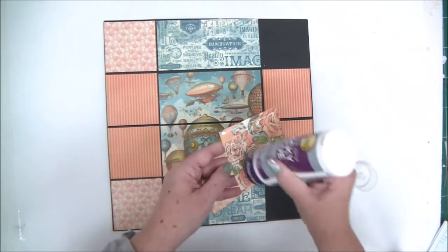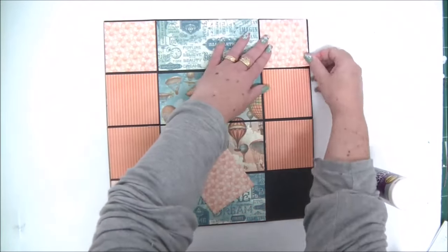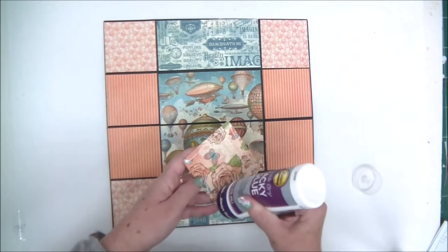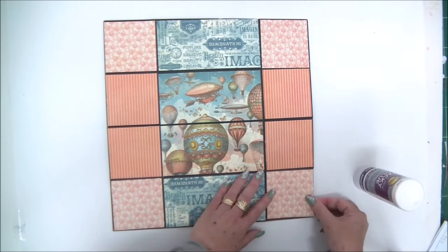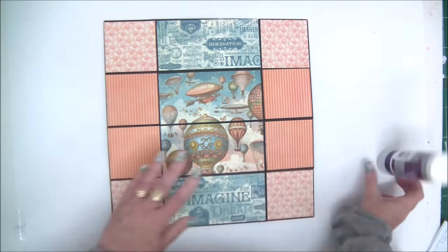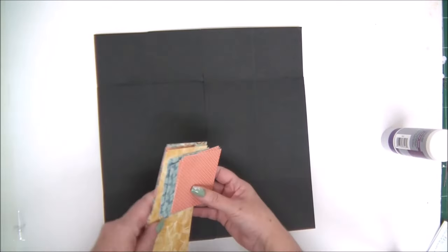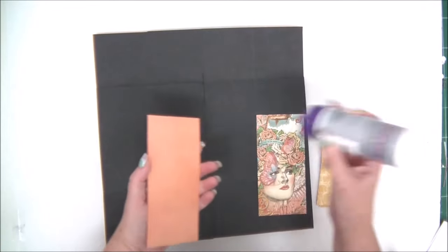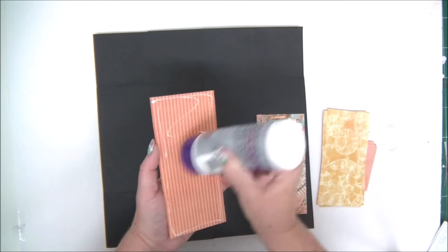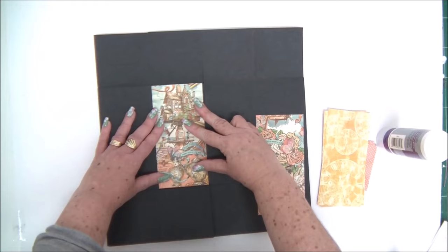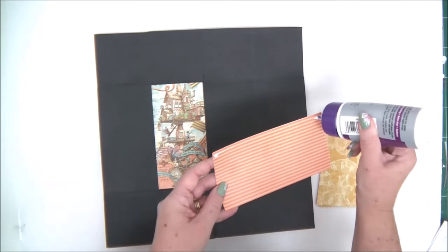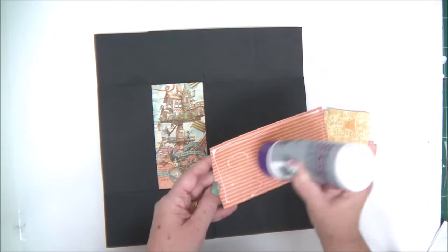I'm using Graphic 45 Imagine paper collection. But of course you can use whatever you have in your stash. So I wanted to show you how to cover the side with the horizontal papers. And now I'm going to cover one side that has the vertical rectangles.